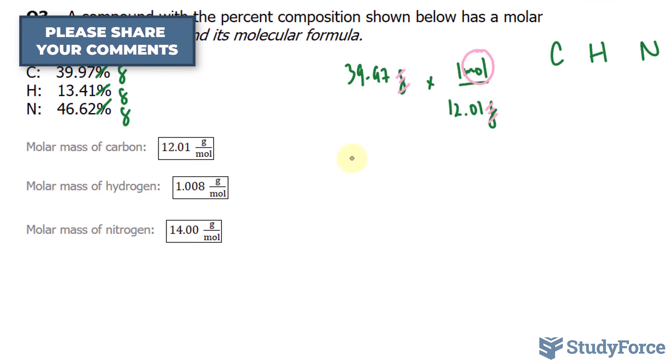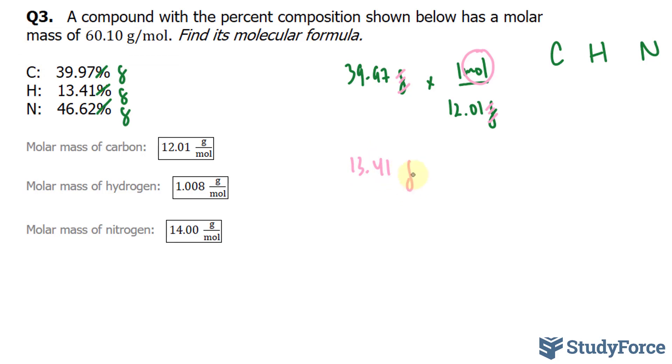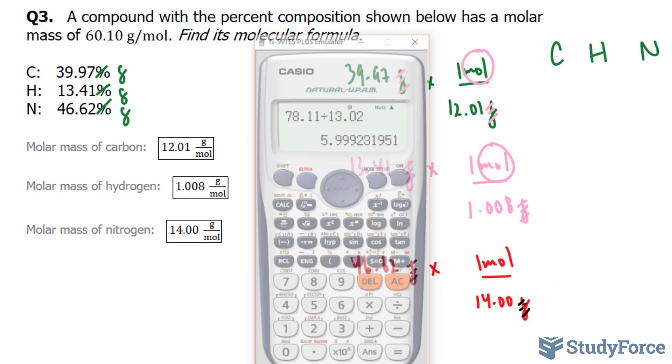I have 13.41 grams this time of hydrogen, and I'll multiply that by 1 mole over 1.008 grams. Once again, the grams unit cancel out, leaving us only with moles. And lastly, I'll take 46.62 grams and multiply that by 1 mole over 14.00 grams. This cancels out. And now I can use my calculator.